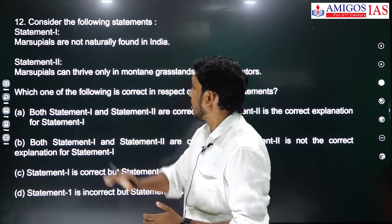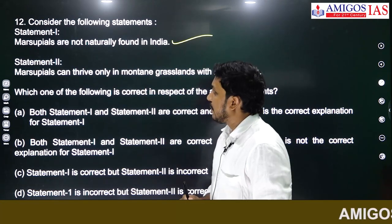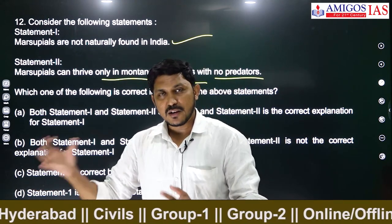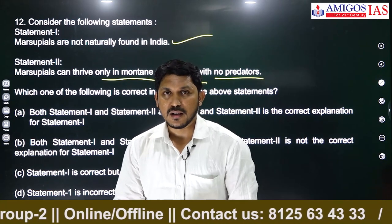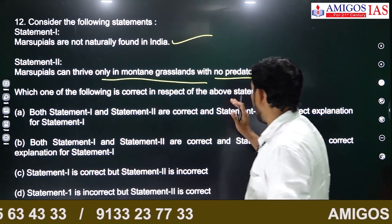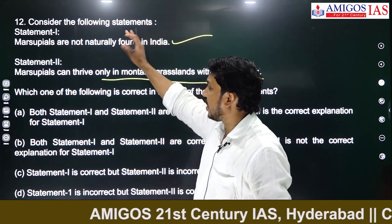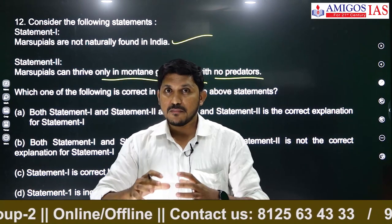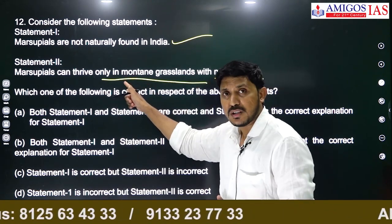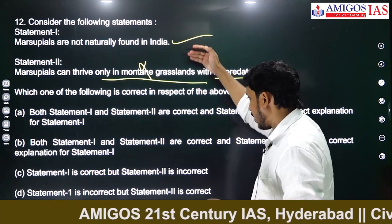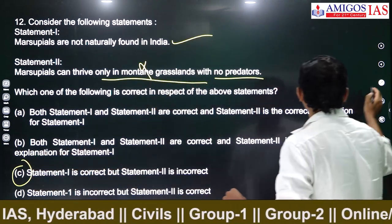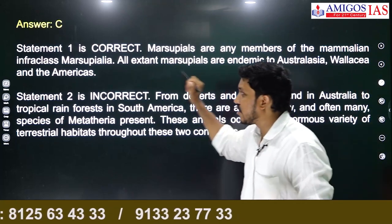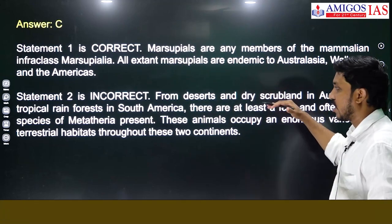Marsupials are pouched animals — examples include kangaroos and wallabies — and they are not naturally found in India. Statement 2 says marsupials can thrive only in mountain grasslands with no predators — that is definitely wrong. Every animal has predators; kangaroos have wild dogs. Marsupials are mostly found in the Americas, Australia, and Wallacea (Indonesia islands). They can inhabit deserts, scrublands, and evergreen forests. So statement 1 is correct, statement 2 is wrong — answer is C.